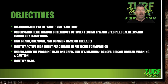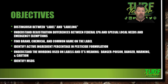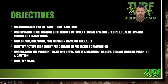We're going to find the brand, chemical, and common name on a label, and we're going to identify active ingredient percentage in pesticide formulations. We're also going to understand the wording used on labels and its meaning — whether they be danger, poison, danger, warning, and caution. And then we're going to identify what a material safety data sheet is, or MSDS sheets.